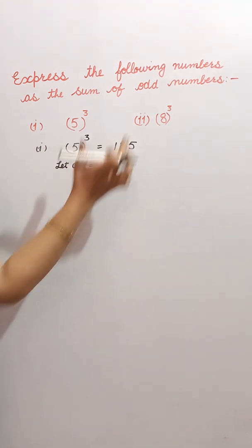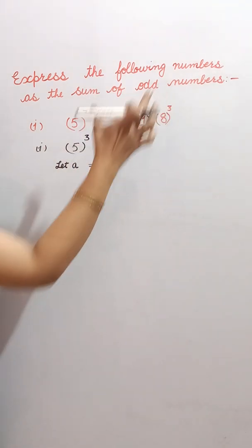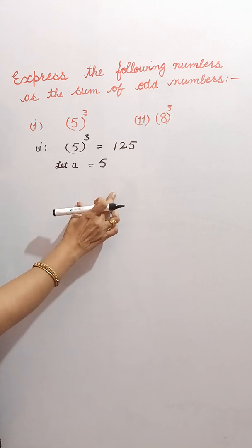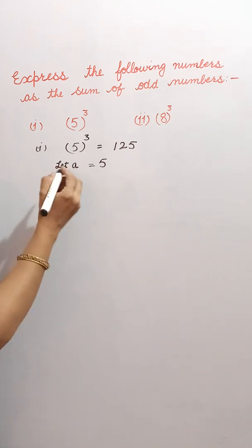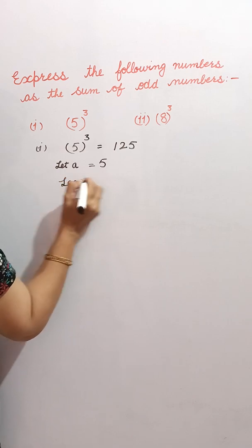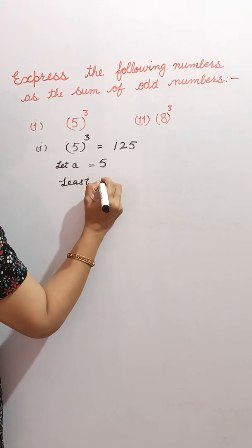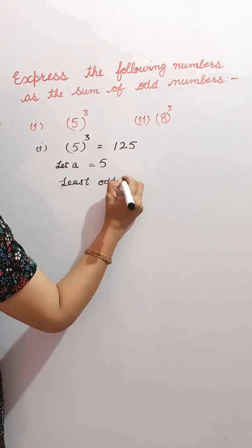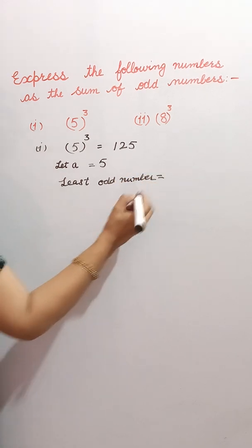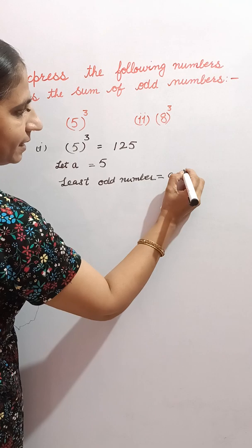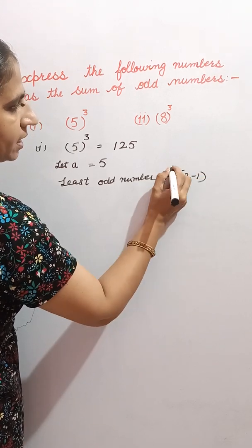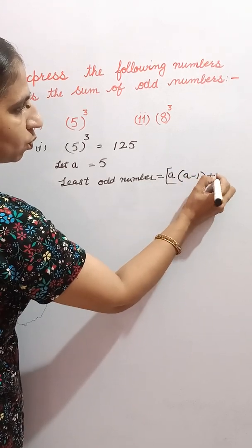To write down the sum of consecutive odd numbers, we must know which should be the least odd number. To find out the least odd number, we have a formula. The least odd number is equal to A(A minus 1) plus 1.